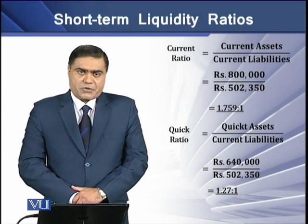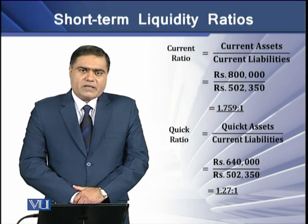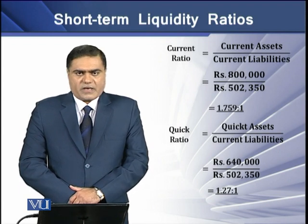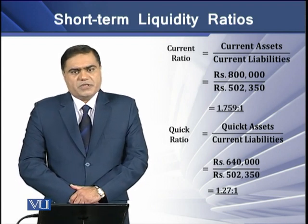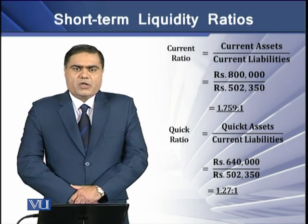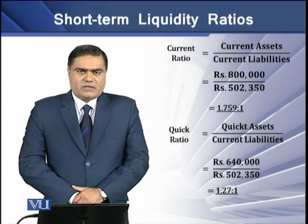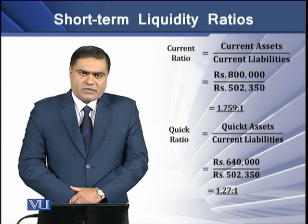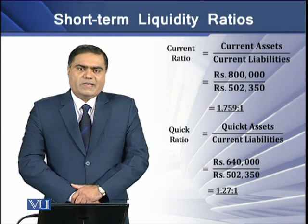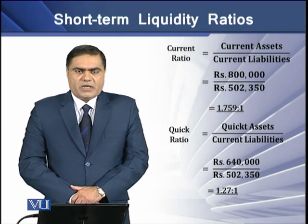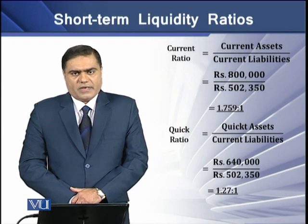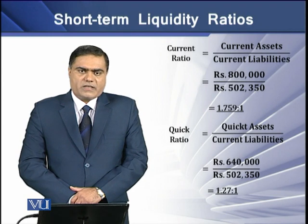Then we have the quick ratio. This ratio tells us how much quick assets a firm has to cover its current liabilities. To determine quick assets, we deduct non-quick assets from current assets. There are generally two types of non-liquid assets: inventory and prepayments. When we deduct these two items from current assets, the resulting assets are called quick assets.